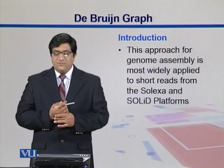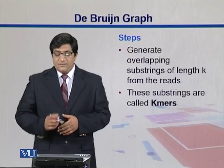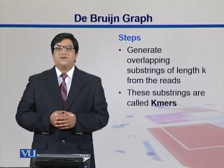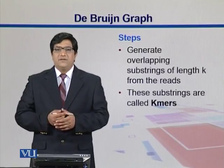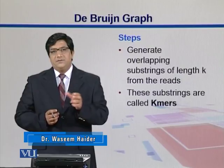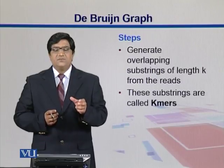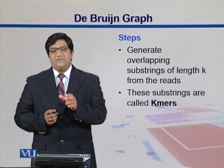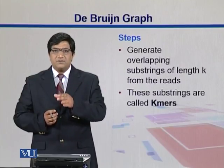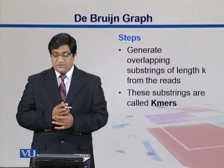This approach is used for Solexa and Solid platforms, and they generate overlapping substrings of length K from the read. What we do here is we are not taking those reads as-is — we are actually subsetting those reads. For example, if the read is 30 base pairs and our K-mer size is 3, we can divide it into 10 different segments starting from position 1, and do the same from position 2 and position 3. In this way, we will have a huge number of K-mers, and that's where the complexity of this algorithm lies.